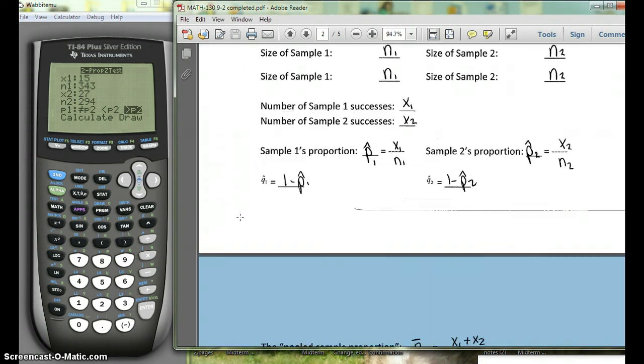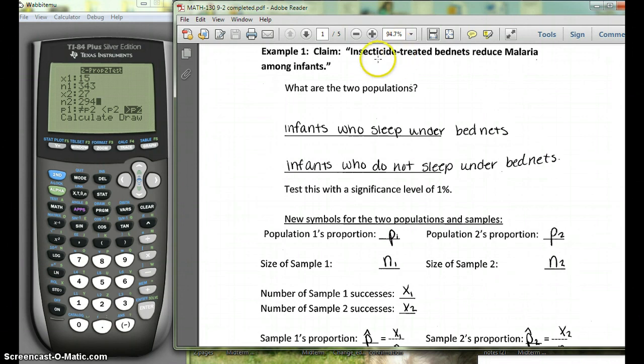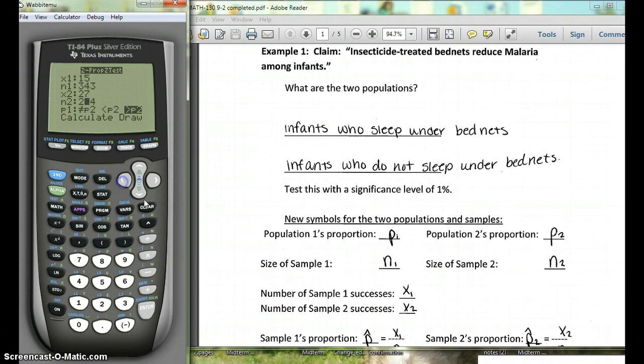Okay, now we're going to go back up and look. Our original claim was that the bed nets reduce malaria. So p1, the ones with bed nets, are less than p2. So we want the less than option.